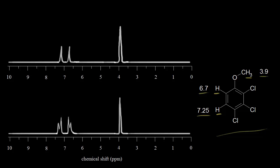Based on what we know so far, we would expect the top NMR spectrum. These three protons give us a signal at a shift of 3.9 — that would be this signal right here. The next proton in red has a shift of 6.7, so we would expect this signal. And the last proton in blue is at 7.25. So this is the expected NMR spectrum based on what we know so far, but this is not the actual NMR spectrum.